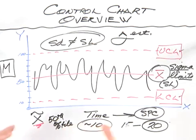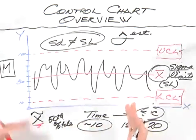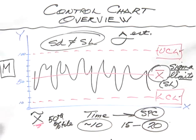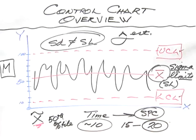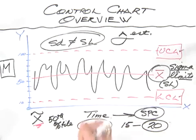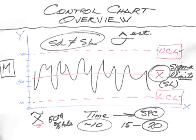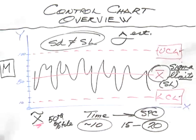So those are the basic elements of the control chart and the key differences from a run chart. What we're going to do in the next piece of this video is to describe how we actually analyze and interpret a control chart.